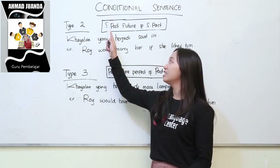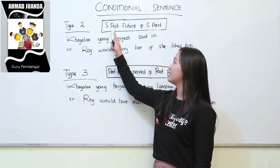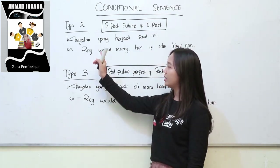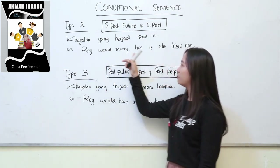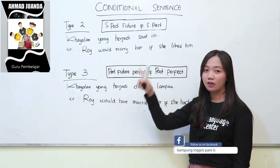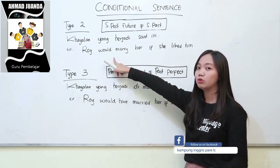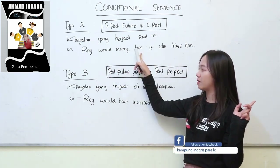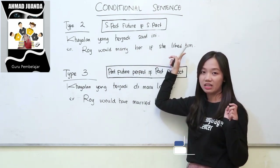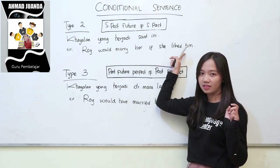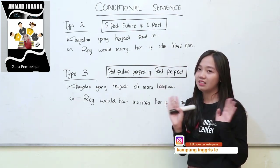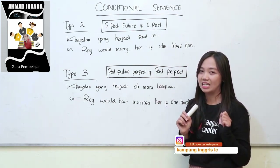Type 2. Rumusnya di sini pakainya simple past future, if simple past. Contohnya: Roy would marry her if she liked him. Roy harusnya menikahi dia perempuan apabila dia perempuan menyukainya. Kenyataannya mereka tidak menikah karena ini hanya hayalan.